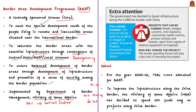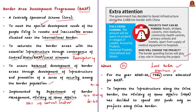The funding pattern of BADP for northeastern and Himalayan states is in the ratio of 90:10 (centre:state), and for 6 other states it is 60:40. Only states with international land borders are eligible; states with only maritime borders are not included. For 2020-21, BADP has been allocated about Rs. 784 crore, distributed to border states and union territories depending on the length of international border and population density. The Ministry of Home Affairs has decided to spend 10% of funds on projects along the India-China border, amounting to about Rs. 78 crore.